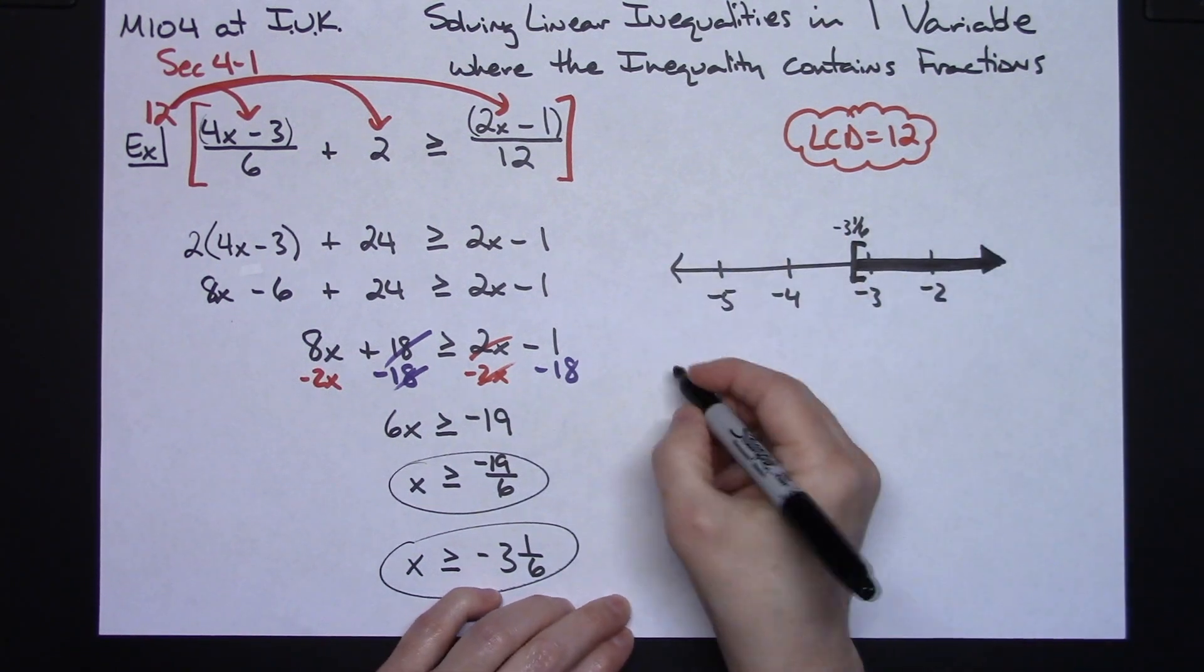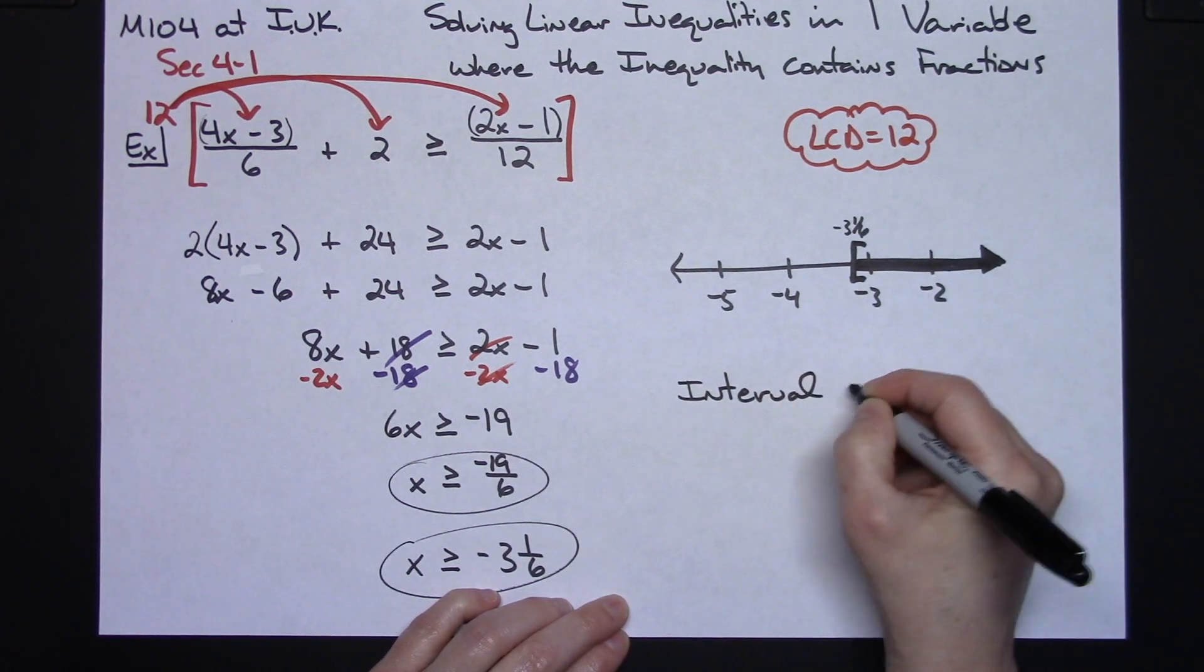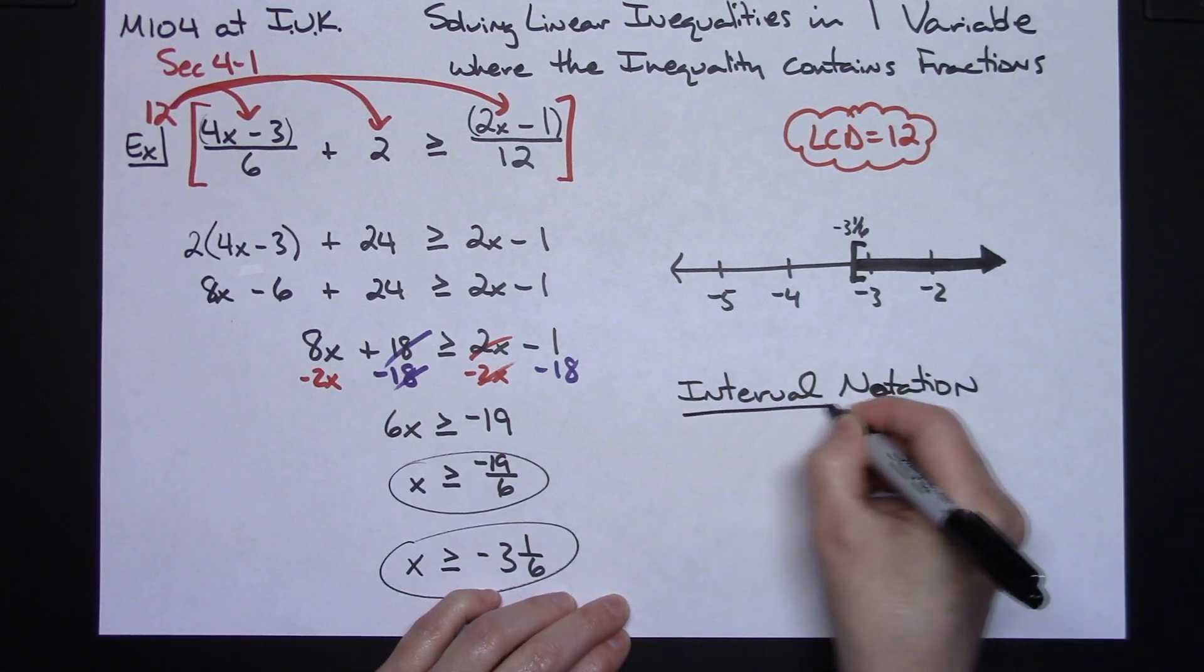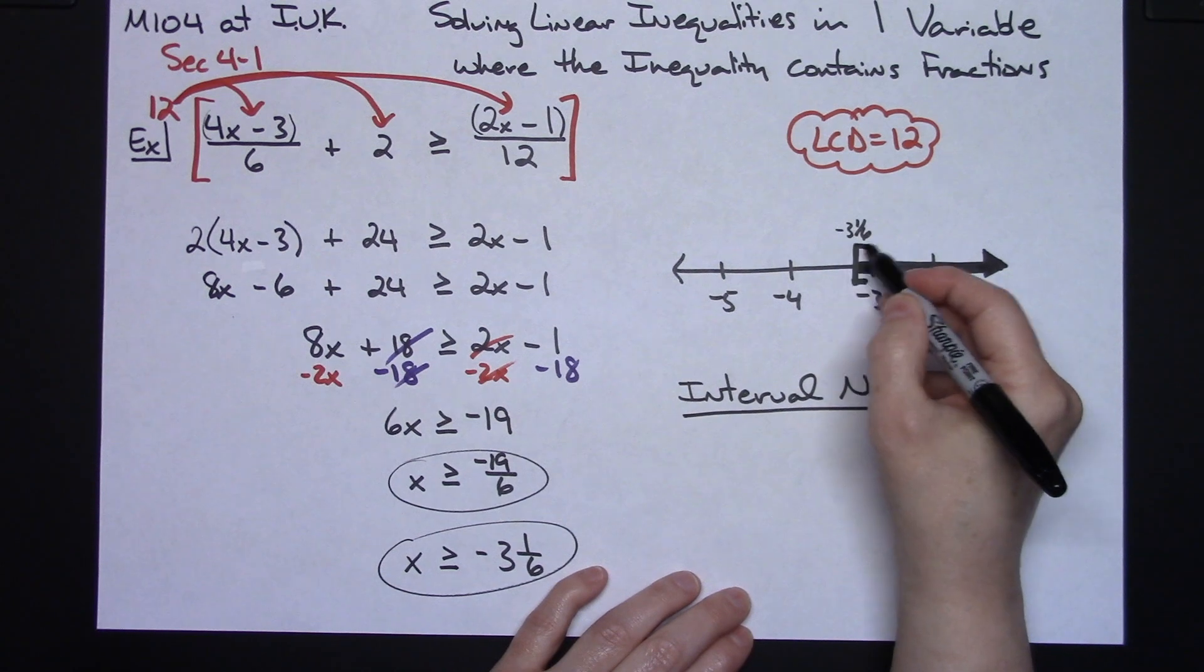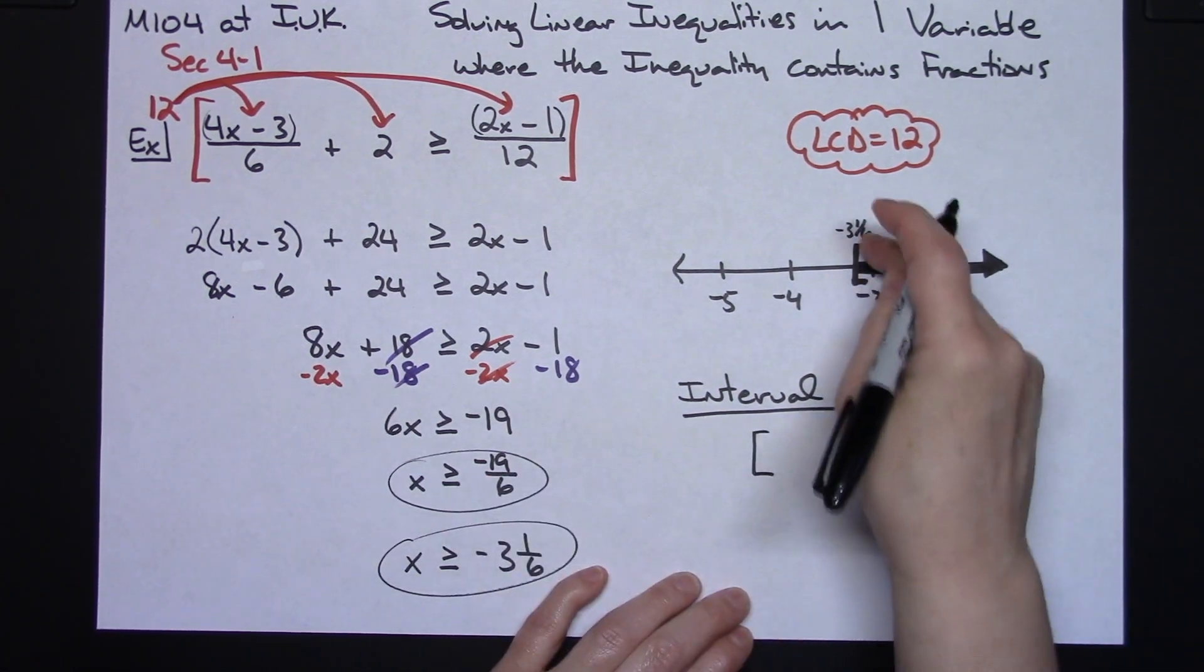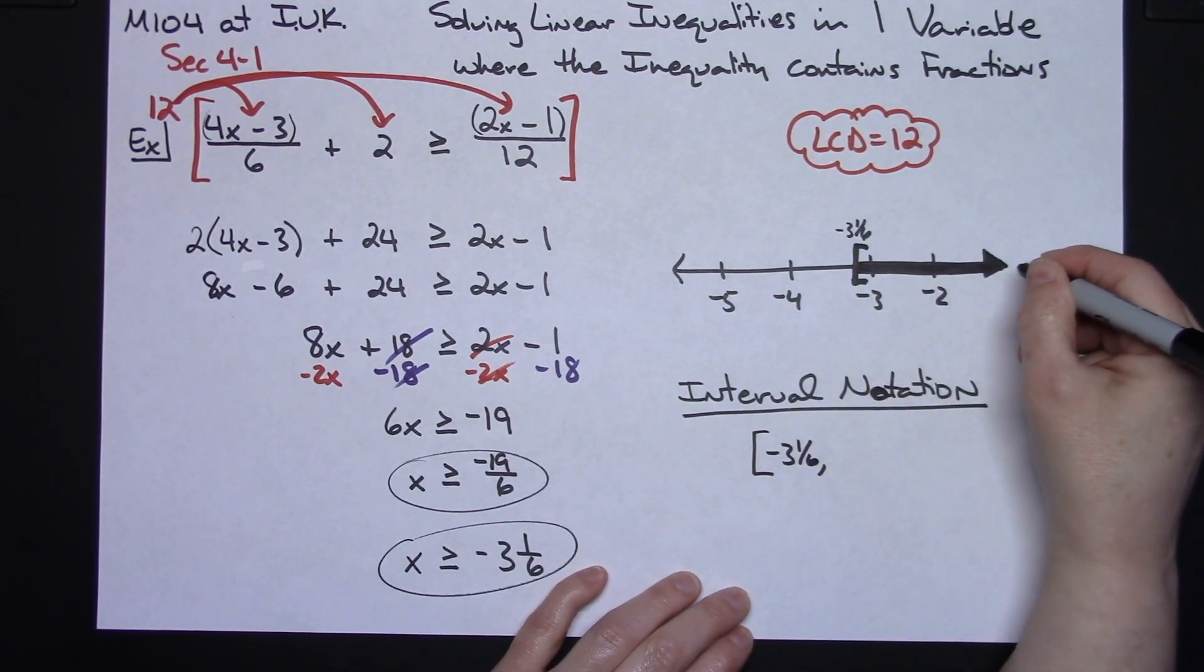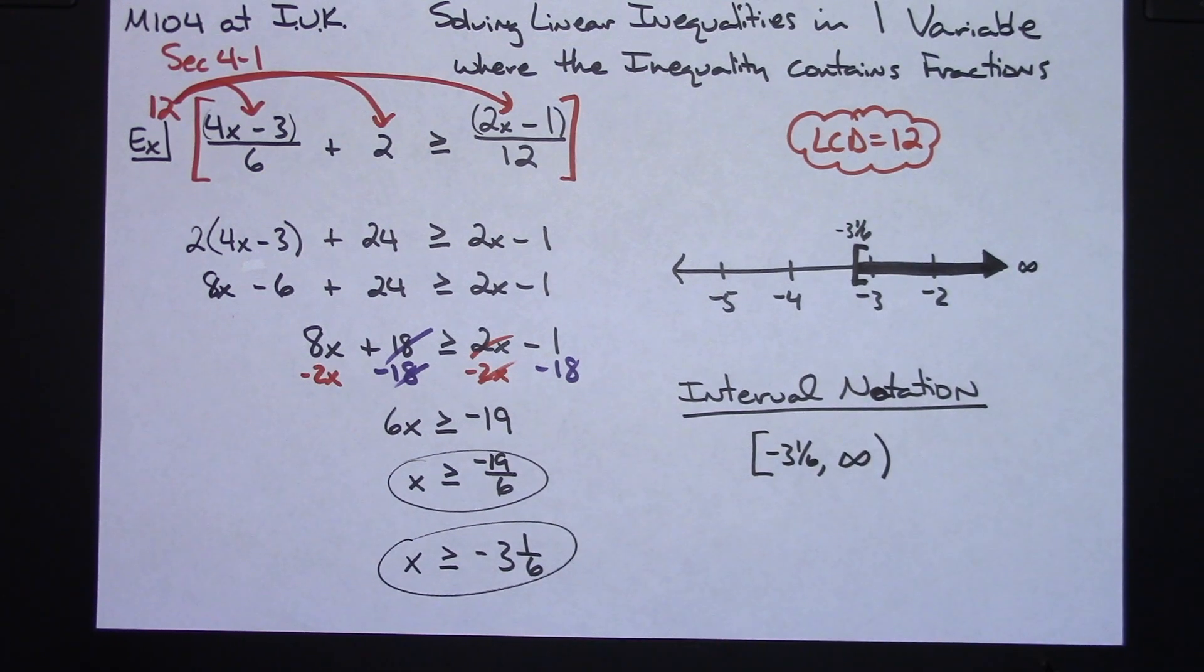After you have done the graph, then you can easily write your answer in interval notation. And if you have done your number line correctly, then it sets it up really nice for you. You're going to use that square bracket. You're going to have either the negative 19 sixths or the negative 3 and 1 sixths. It doesn't matter the form of the number there. And then all of the numbers up to positive infinity on that number line with a curvy bracket right there.